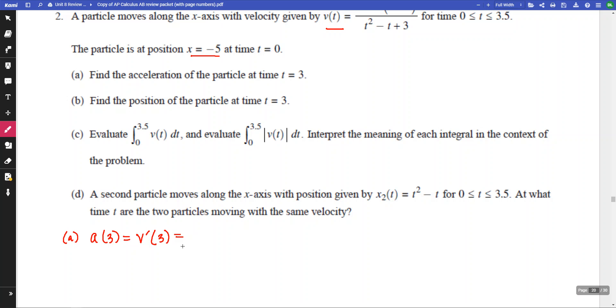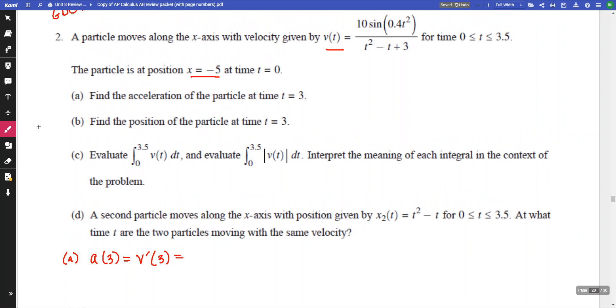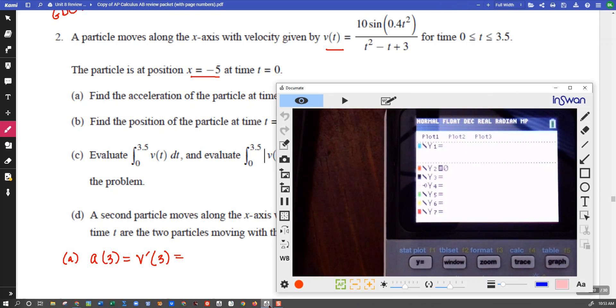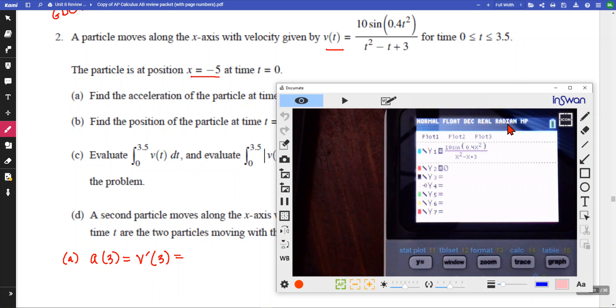And we have a calculator, so that's all the notation that we need. And we can come over and make sure that we enter in our information correctly. So, our velocity equation, if we enter it in, is 10 times the sine of 0.4 variable squared, all over variable squared minus the variable plus 3. And note that we are in radian mode.